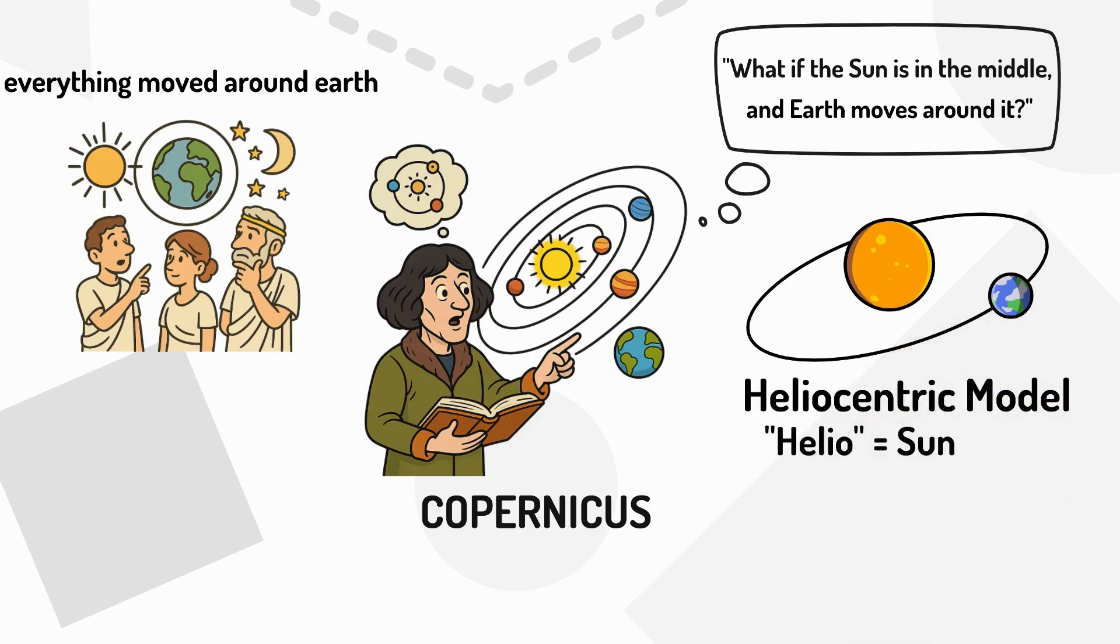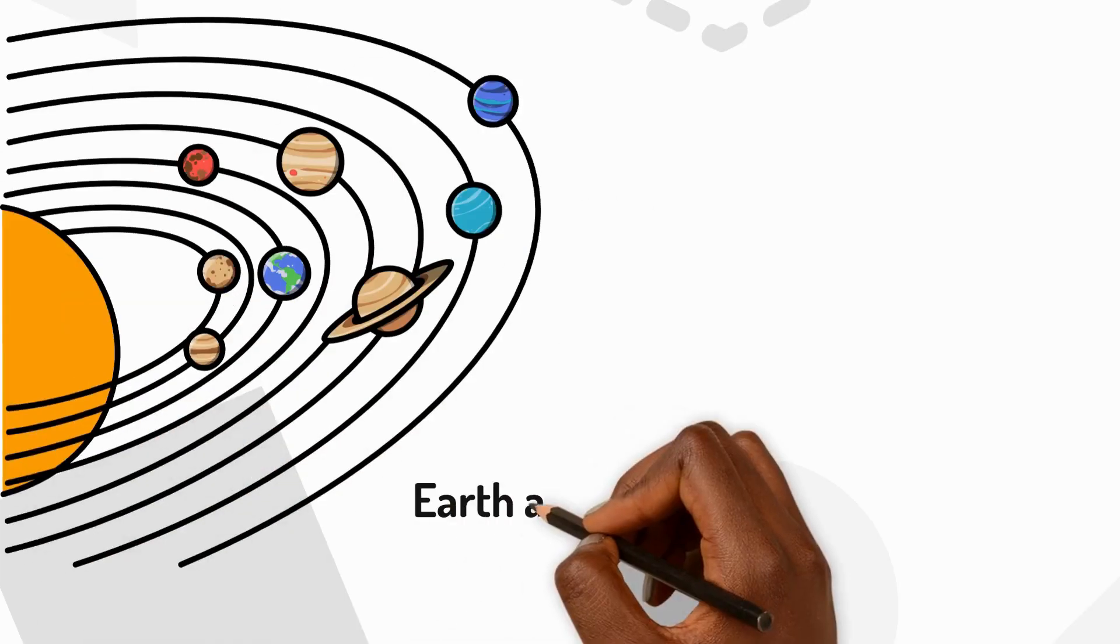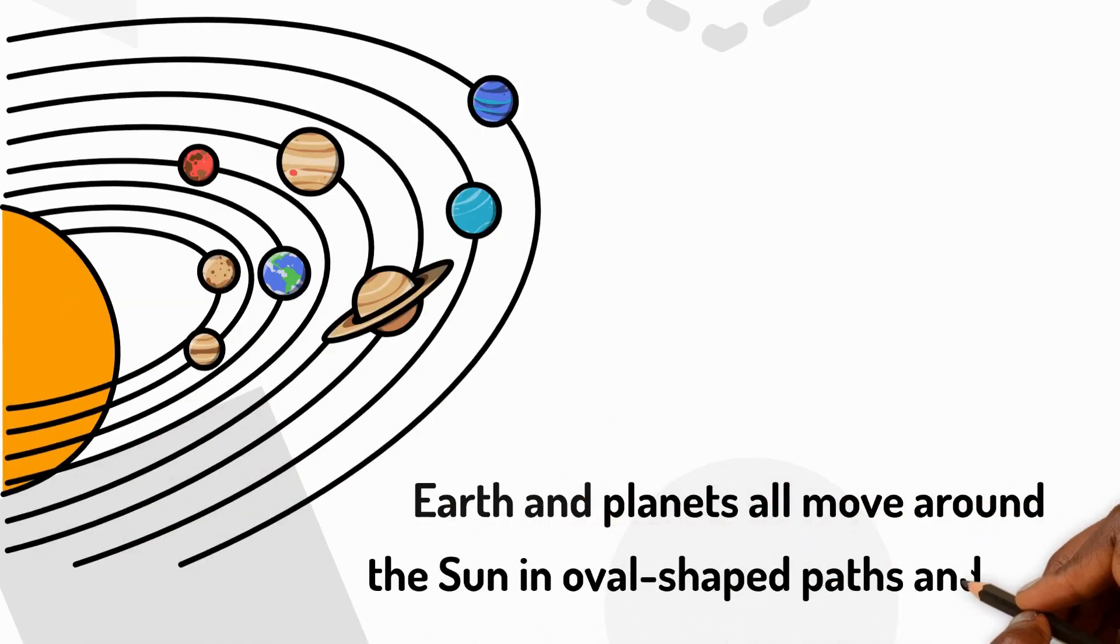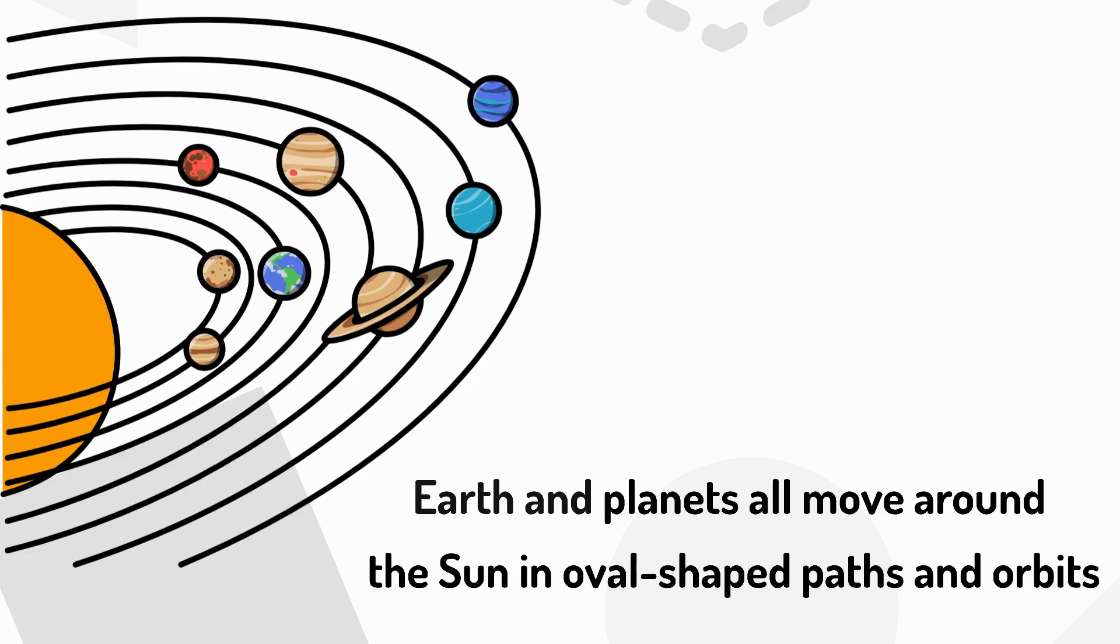Helio means Sun. He figured out the Earth and the other planets all move around the Sun in oval-shaped paths called orbits, and he was right.